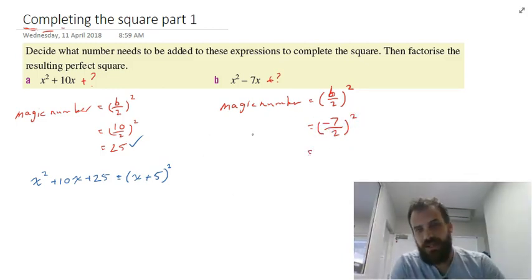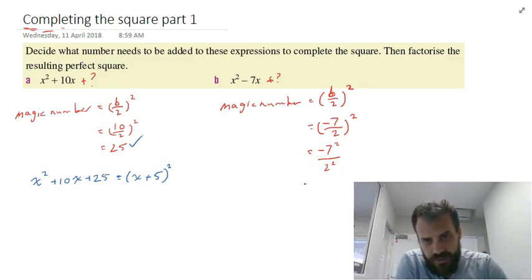It's a little bit ugly here, and we might not be allowed to use a calculator, so we're going to have to use our index laws. Negative 7 over 2 all squared is the same as negative 7 squared over 2 squared. That's like index law 2. So, negative 7 squared... Now you need to be careful because it's negative 7 squared. So negative 7 times negative 7 is positive 49 over 2 squared, which is 4. That's our magic number.